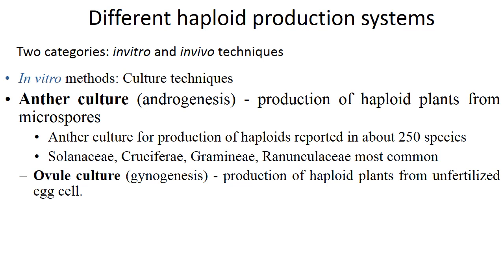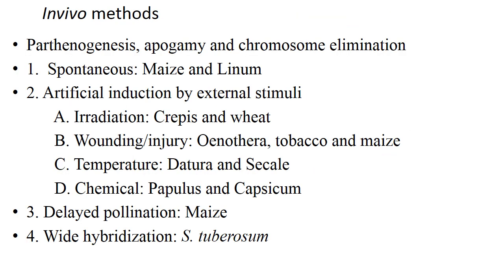For ovule culture, that is called gynogenesis — here production of haploid plants from unfertilized ovules. Coming to in vivo methods, these have three popular techniques: parthenogenesis, apogamy and chromosomal elimination.